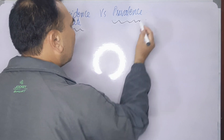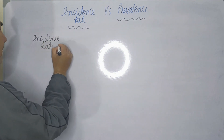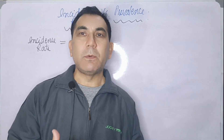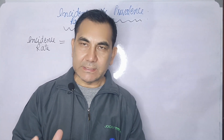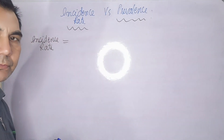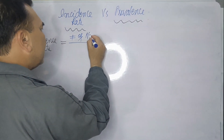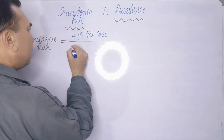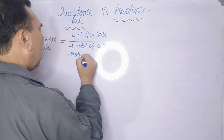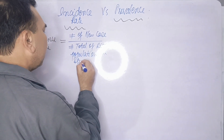Let's go through the definition of the incidence rate. The incidence rate is the total number of new cases in the risk population in a specific time period. The formula for the incidence rate is the number of new cases divided by the total number of people in the risk population in a specific time.